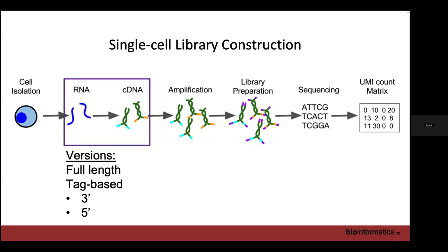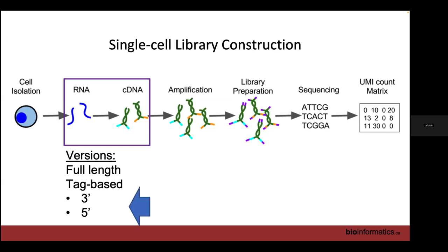Starting at the front: we have full-length and tag-based methods. For full-length methods, you can analyze them the same way as bulk RNA-seq — you just have to automate your scripts to move over several hundred files instead of doing them one at a time. We're not going to talk about that. Instead, we're going to talk about tag-based methods for three-prime or five-prime.